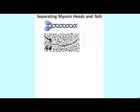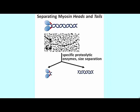We can dissect the myosin monomer into two parts — we can separate the heads and tails using specific proteolytic enzymes. Myosin thick filaments are made of proteins, and each myosin monomer is made of two separate proteins.